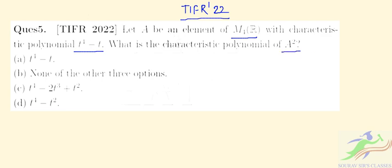This is quite straightforward. We can write that the characteristic polynomial of A is given as t⁴ - t.